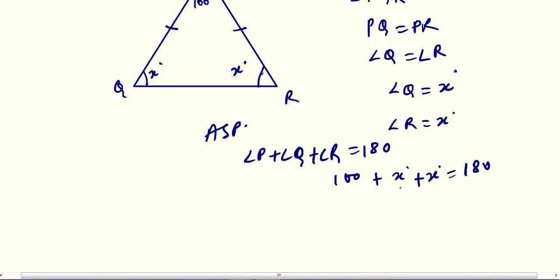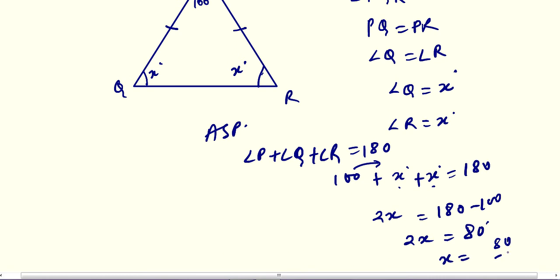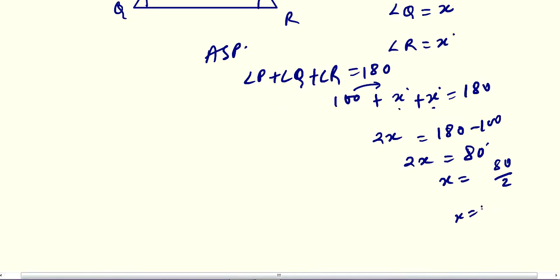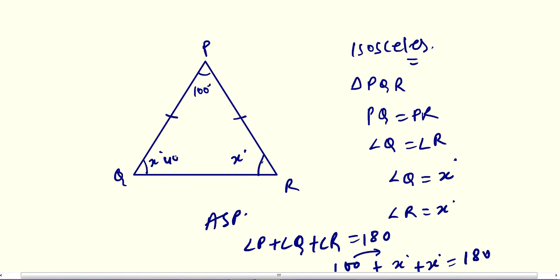So 100 plus X plus X equals 180. This gives 2X equals 180 minus 100, which is 80 degrees. Finally X equals 80 divided by 2, so X equals 40 degrees. So 40 degrees is the required answer.